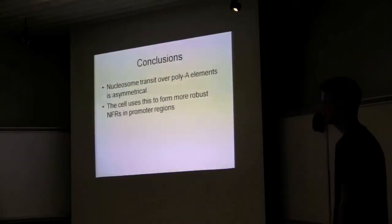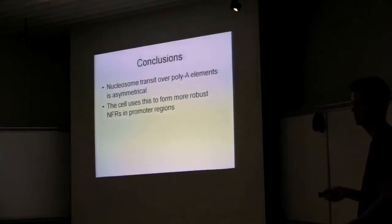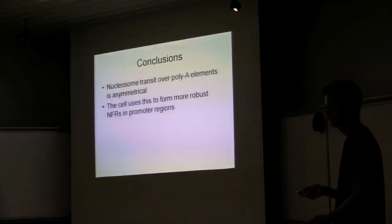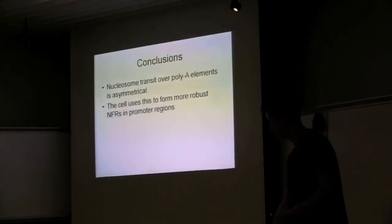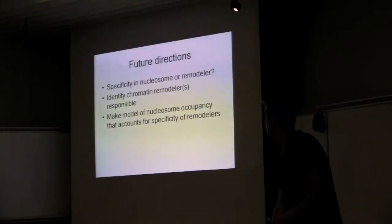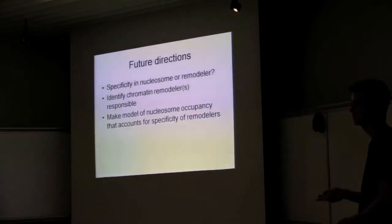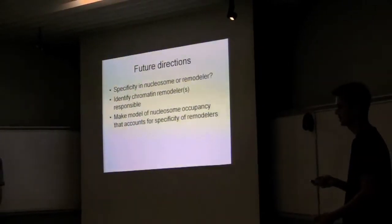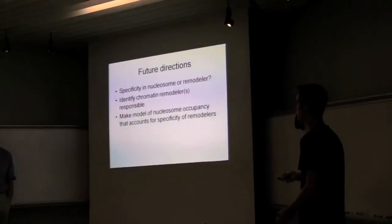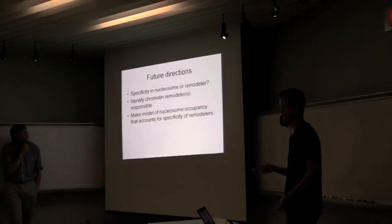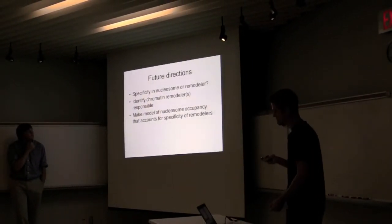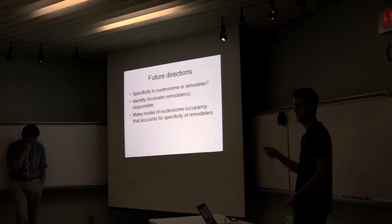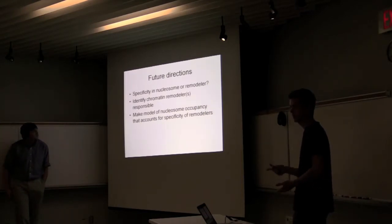So in conclusion, poly-A sequences result in an asymmetrical arrangement of nucleosomes on the DNA, and the cell uses this to get its promoter architecture to keep nucleosomes out. There are still some unresolved questions here though, like whether the specificity actually lies in the nucleosome or the chromatin remodeler, because both are possible with this model. And figure out if there's a specific chromatin remodeler that's responsible. As well, it'd be really interesting to see if you made a model of nucleosome occupancy that takes this into account. Now how much more of the in vivo occupancy can you account for?